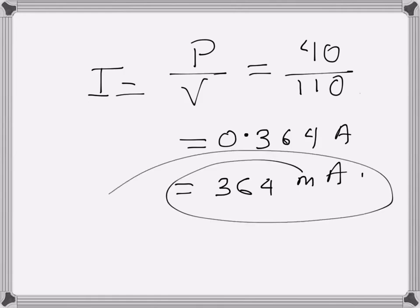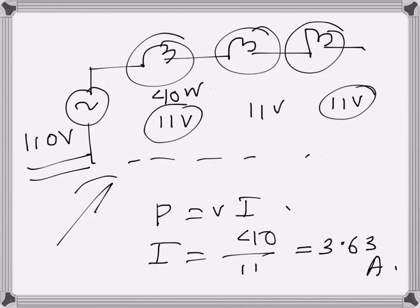The current through each of them will be like that, and of course if we want to calculate the total supply current, this one will be multiplied by 10. While in this case, the current will be the only one current, and that is 3.63 amps.